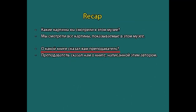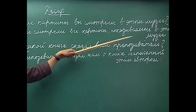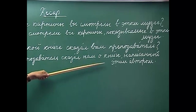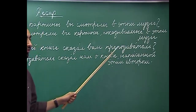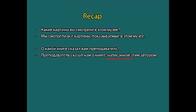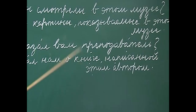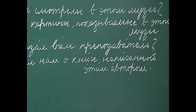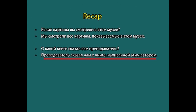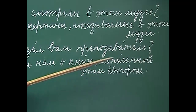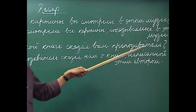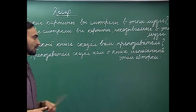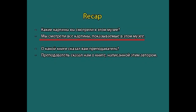Now let us move on to the past participle passive. 'O kakoy knige skazal vam prepodavatel?' — About which book did your teacher tell you? 'Prepodavatel skazal nam o knige napisannoy etim avtorom' — The teacher told us about the book which was written by this author. Here the action is in the past tense, that is why we are using past participle passive. If we change the sentence using 'katori', we use 'kotoruyu napisal etot avtor' because it depends on the verb of the subordinate clause.